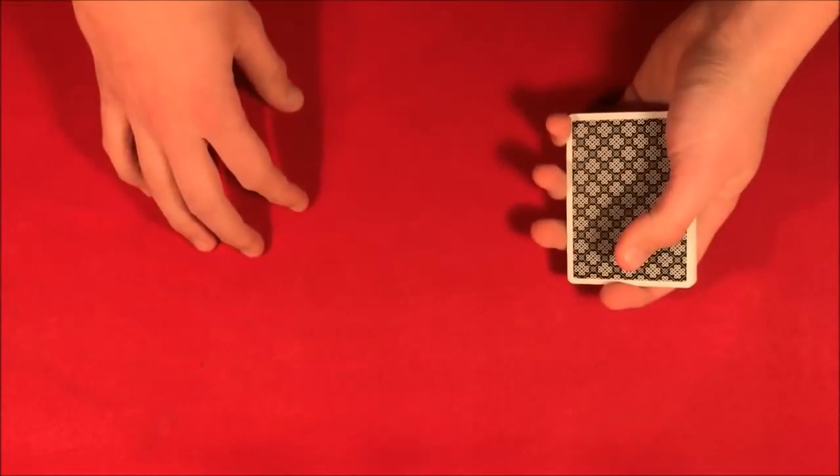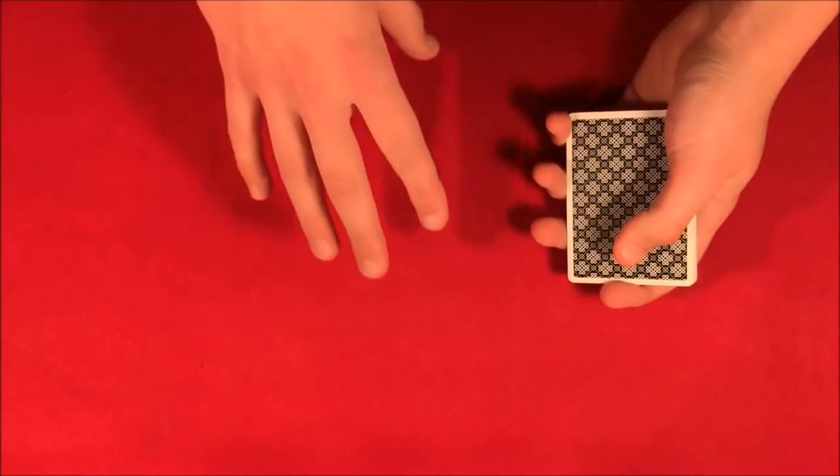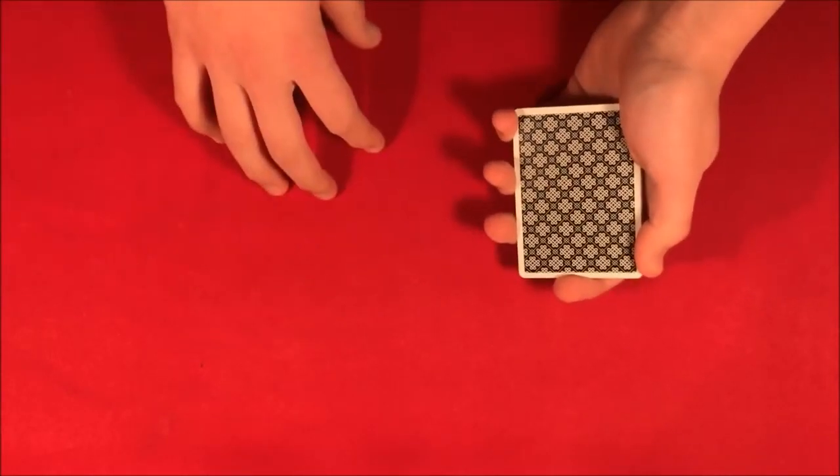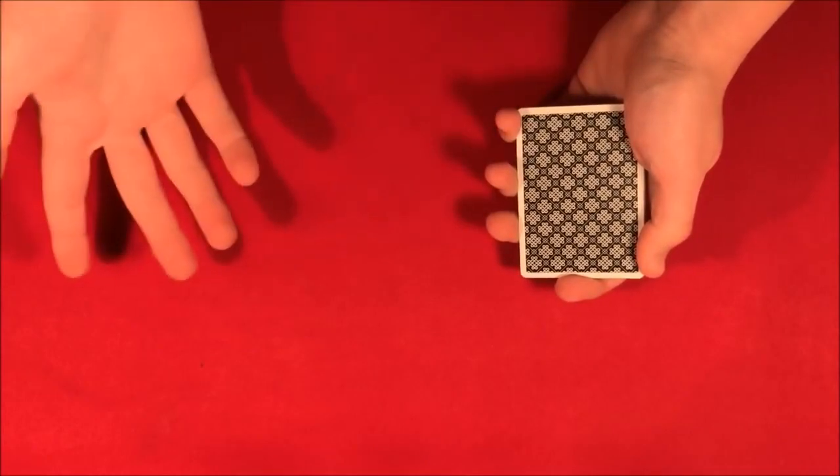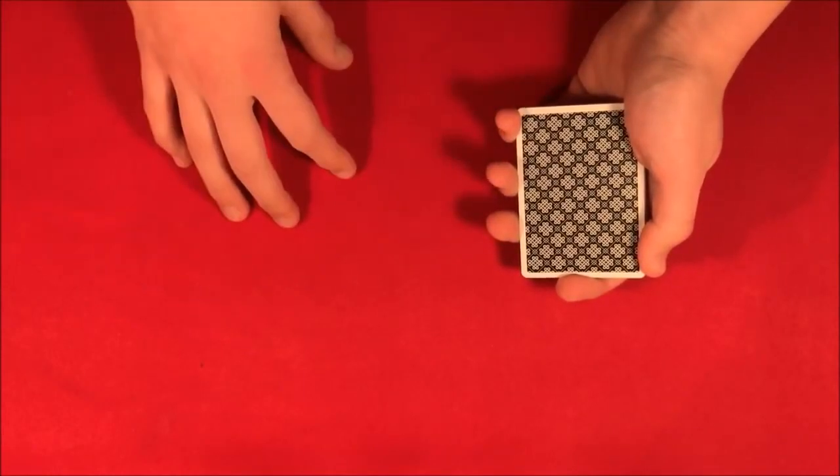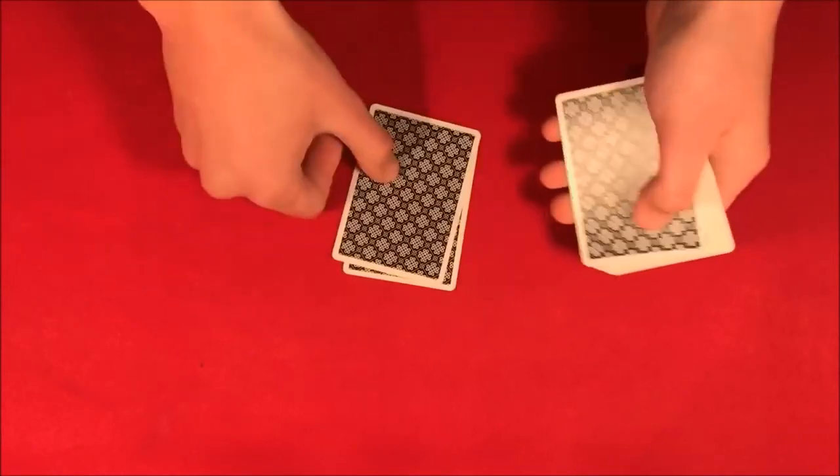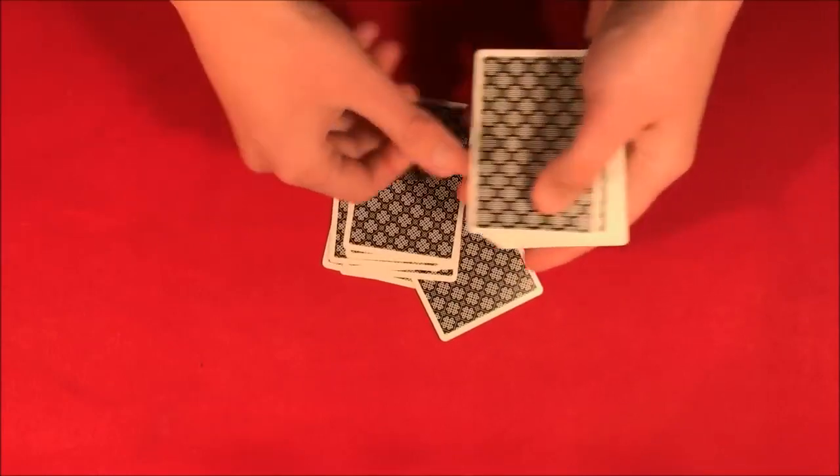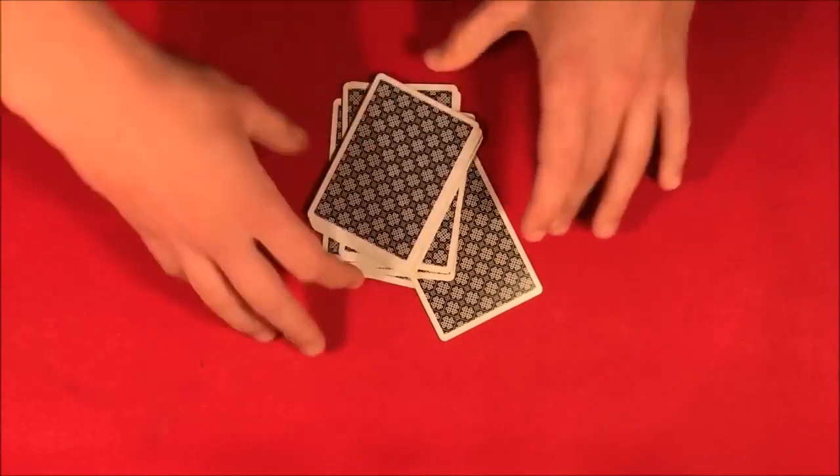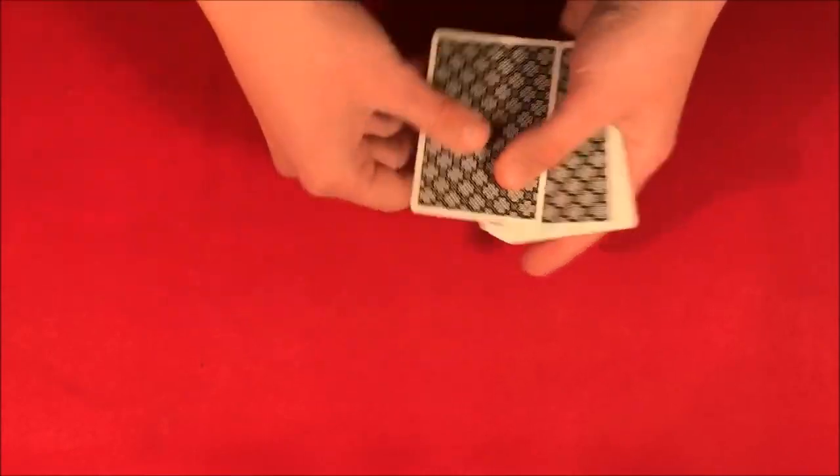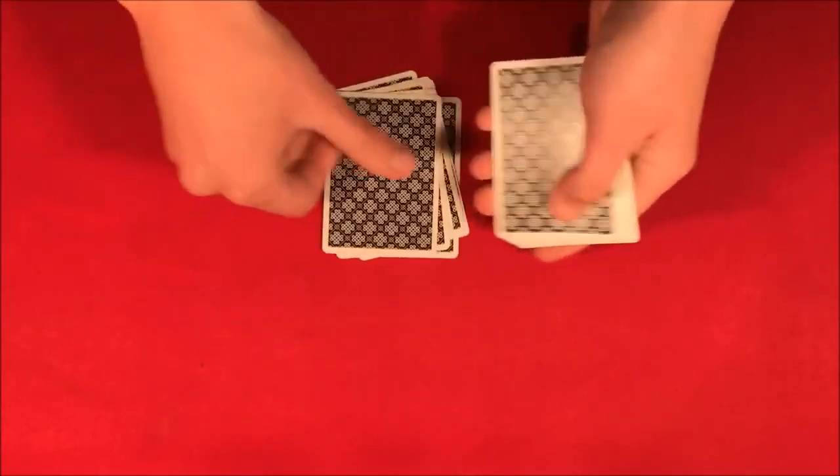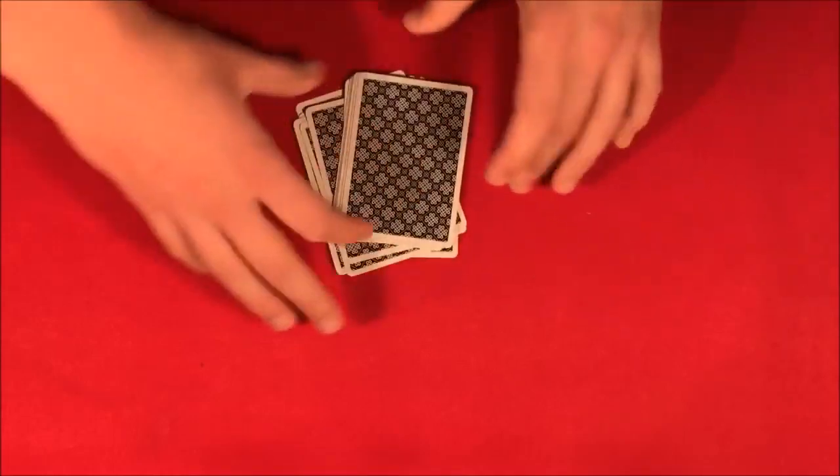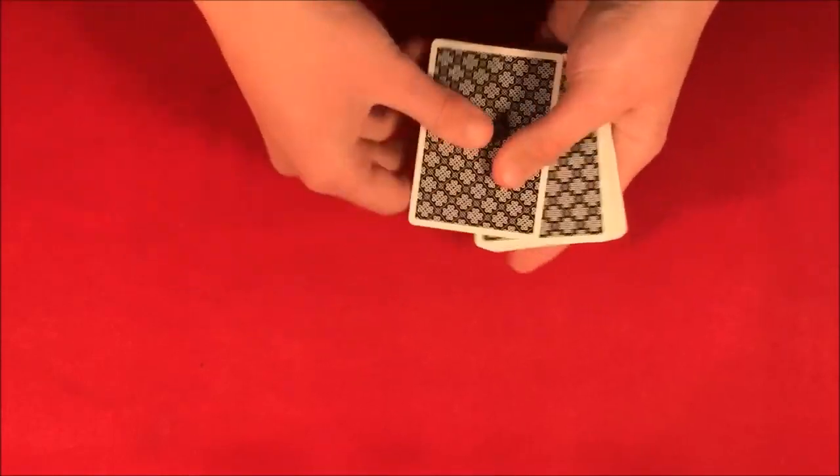But the whole thing here is, let's say with the 16 cards, you have the spectator pick a number that is a little more than half of the number they originally chose. So if it's 16 it would have to be like 9 or above. Let's say they pick 10. So you count down 10 cards, put it down here, and you do the same thing, counting down 10 again, and you'll do it one more time, counting down 10.